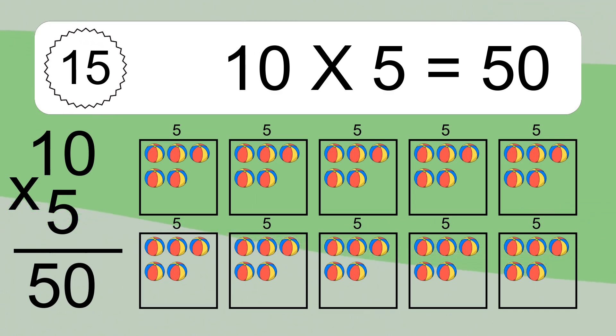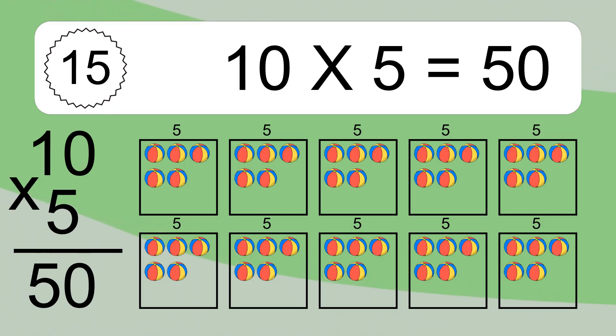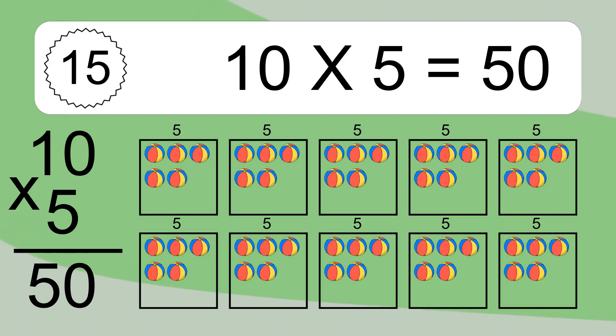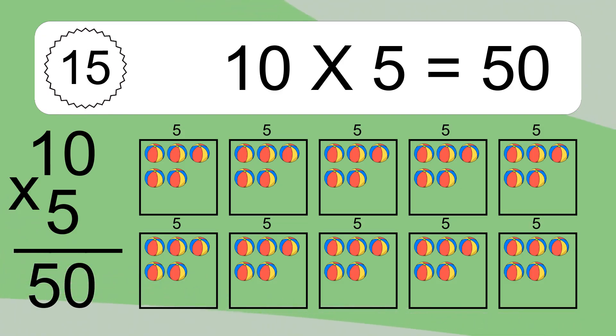We have 10 boxes, and each box has 5 colorful balls inside. If you count all the balls in all the boxes together, you will have 10 times 5 balls. This equals 50 balls.